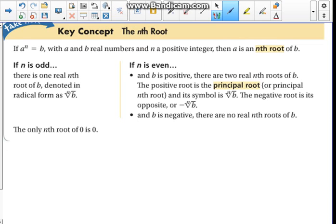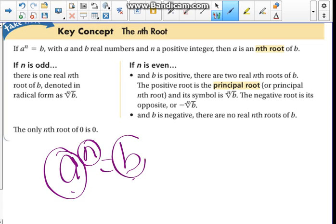For the nth root, we can say if a to the n equals b, with both a and b real numbers, and n is a positive integer, then a is the nth root of b. That's what we developed from the previous page. Now, there are some properties that apply to this.